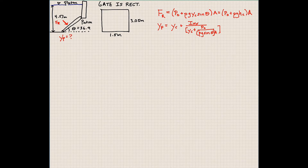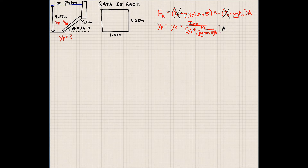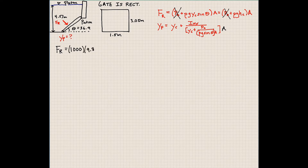If we assume atmospheric pressure is negligible here, we go ahead and cancel out P0 because atmospheric pressure acts on both sides of the gate and it ends up canceling itself out. So if we go to calculate the resultant force — assuming this is just water acting on it — the water has a density of 1000 kg per meter cubed, times gravity, times Y sub C, times sine theta. Now we have to do some additional calculations to determine what Y sub C is.